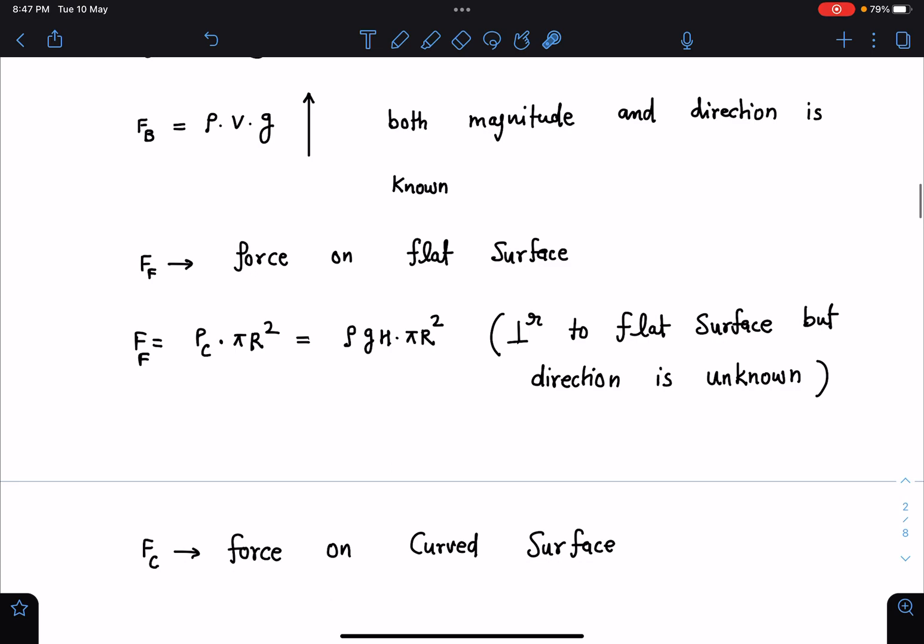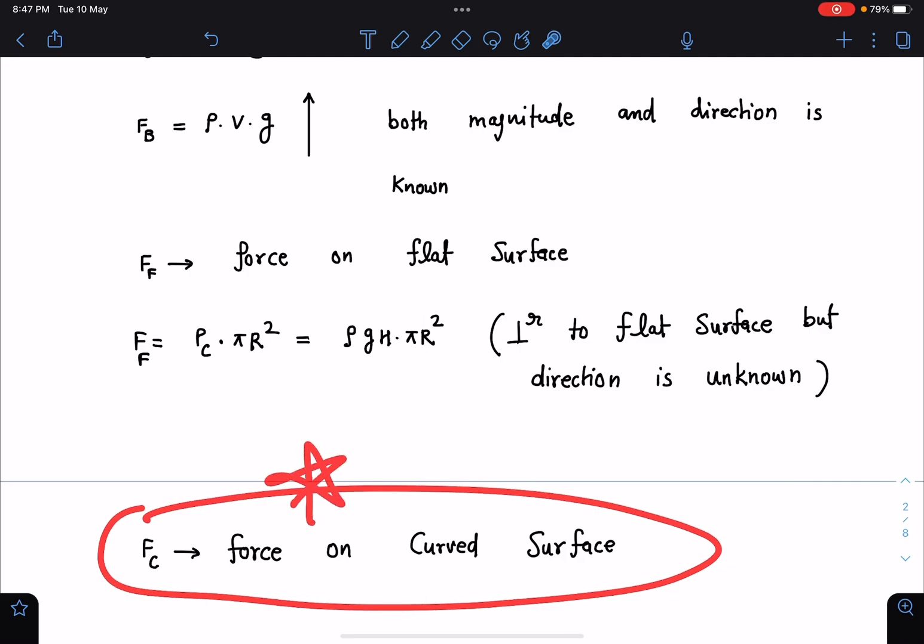Now you can see here this one vector, both direction and magnitude are known to us. Here magnitude is known to us but direction is unknown, that depends on the orientation of the body. And third one is force on the curved surface we have to comment on this part.